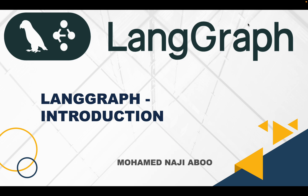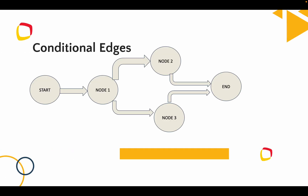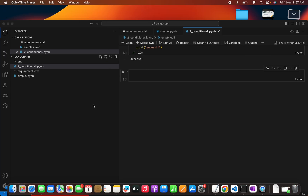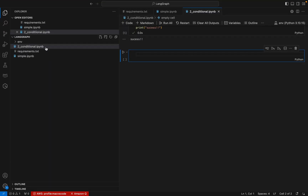Hi friends, welcome back. Naji here. We are continuing our discussion with LangGraph, and in this video we will be discussing conditional edges. So what we are trying to achieve: we will have a starting node, then from the starting node we will go to a second node called node 1, and based on some conditions it will go to node 2 or node 3, then it will end the process. This is similar to what we have done in our first video, but conditional edges will be added.